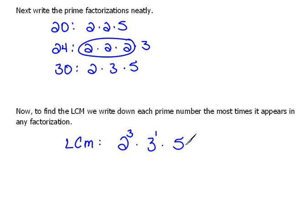Then we move to our 5s. Here we have 1 five, no 5s, and 1 five. So the most times it appears is only once in any single factorization.